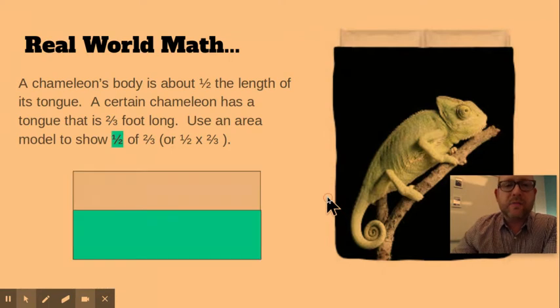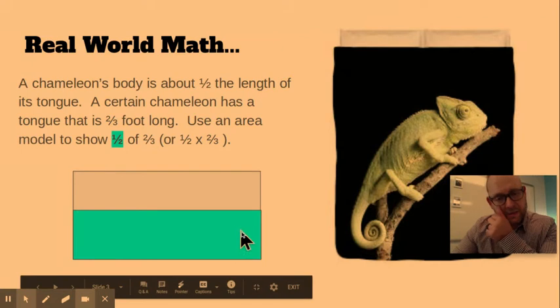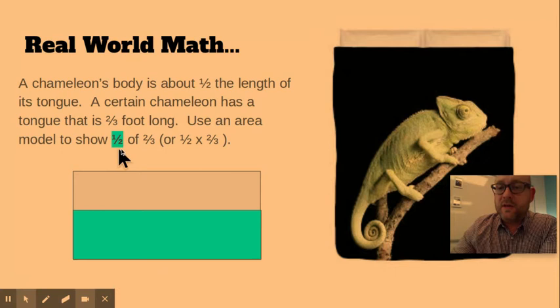So what would this look like? Well, we would draw ourself a little box here. So if we take, first thing we need to do is draw us a rectangle or a box and shade in one half of that box. That's our first factor of our multiplication problem.